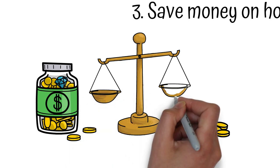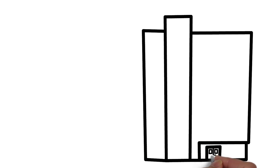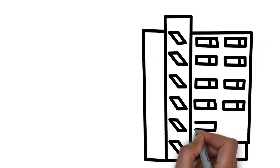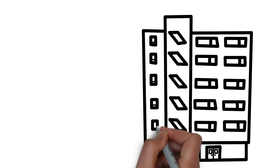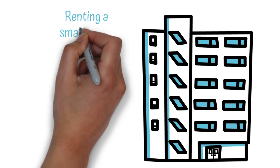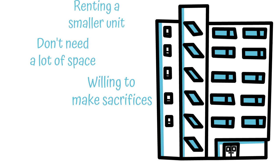These are some ways to help you save money on housing. Renting a Smaller or Shared Apartment or House. One way to save on housing costs is to consider downsizing to a smaller living space. This can involve renting a smaller apartment, studio, or even a shared bedroom in a house or apartment. Renting a smaller unit can be a good option if you don't need a lot of space or are willing to make some sacrifices in order to save money on rent.